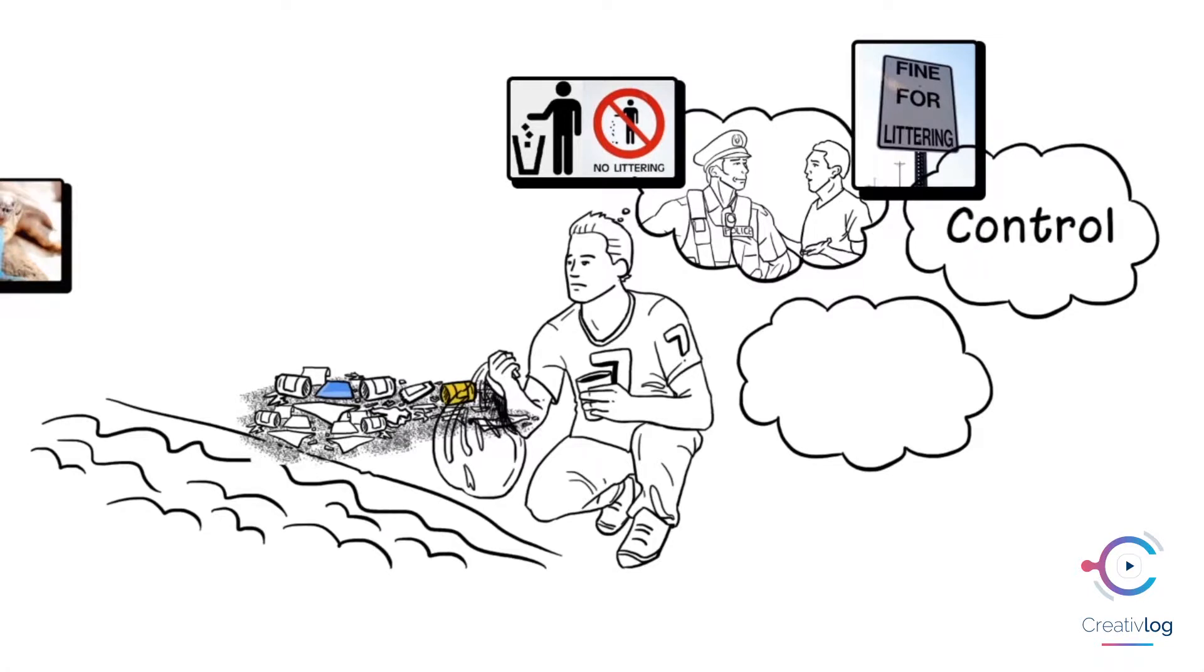The second tier is control. We control the amount of litter that flows into our waterways by adding catch bins and organizing cleanup events.